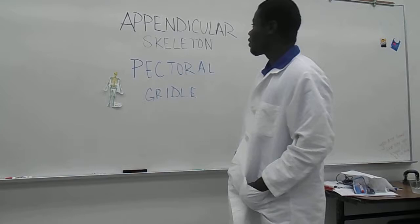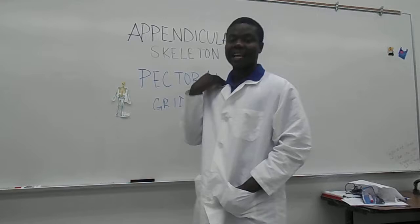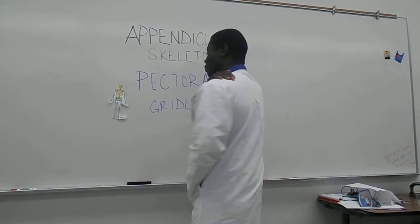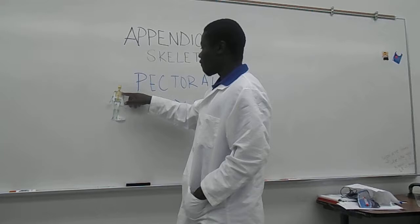In the appendicular skeleton system, we have the pectoral girdle. The pectoral girdle is composed of the clavicle, which is also known as the collarbone, and the scapula, which is known as the shoulder bone. As you can see in my diagram, the clavicle is right here and the scapula is behind the clavicle.